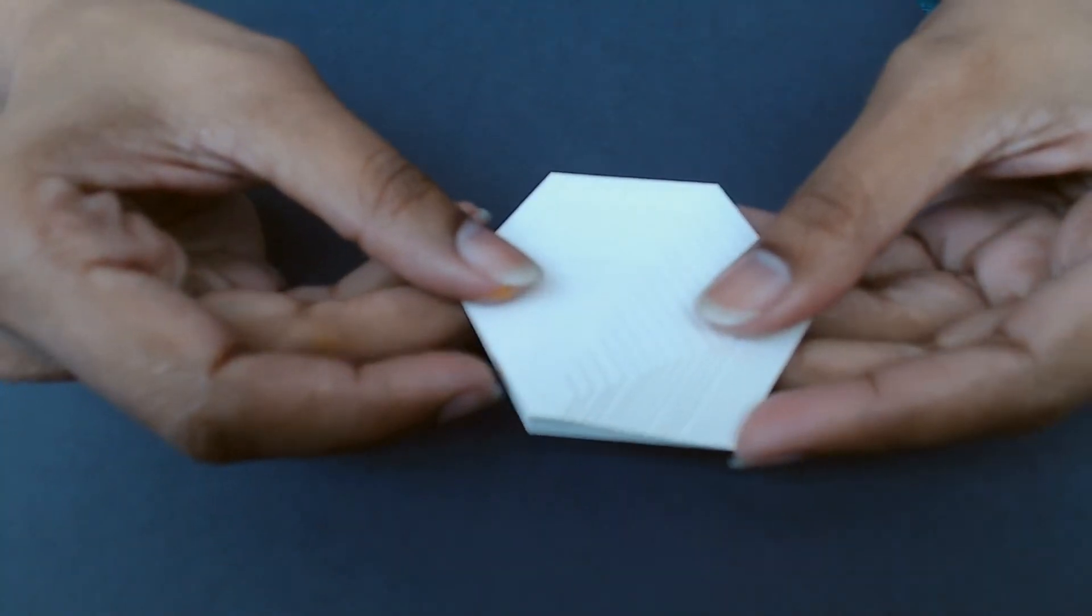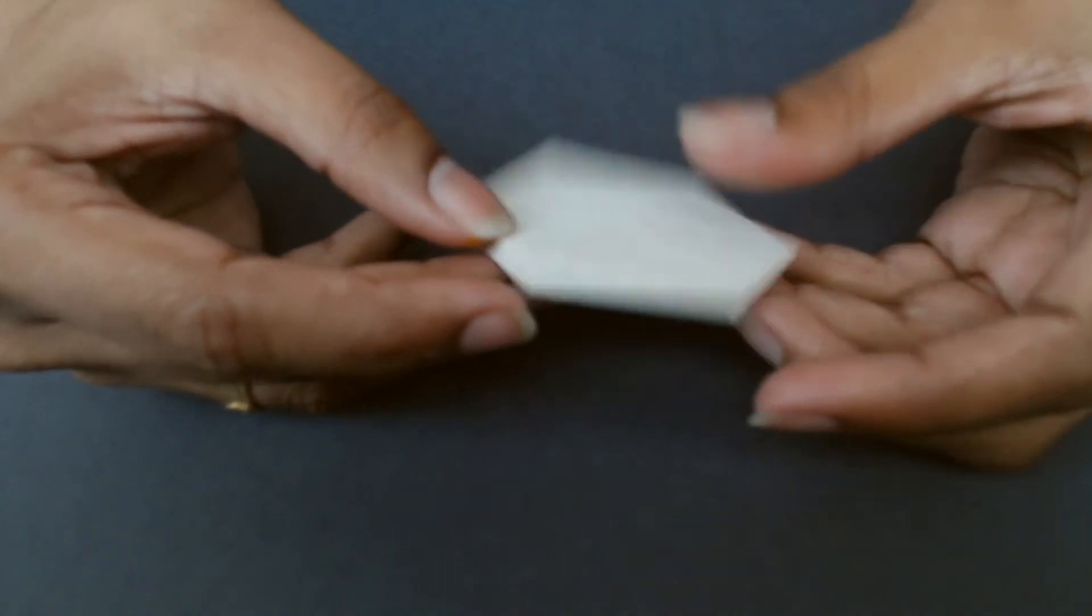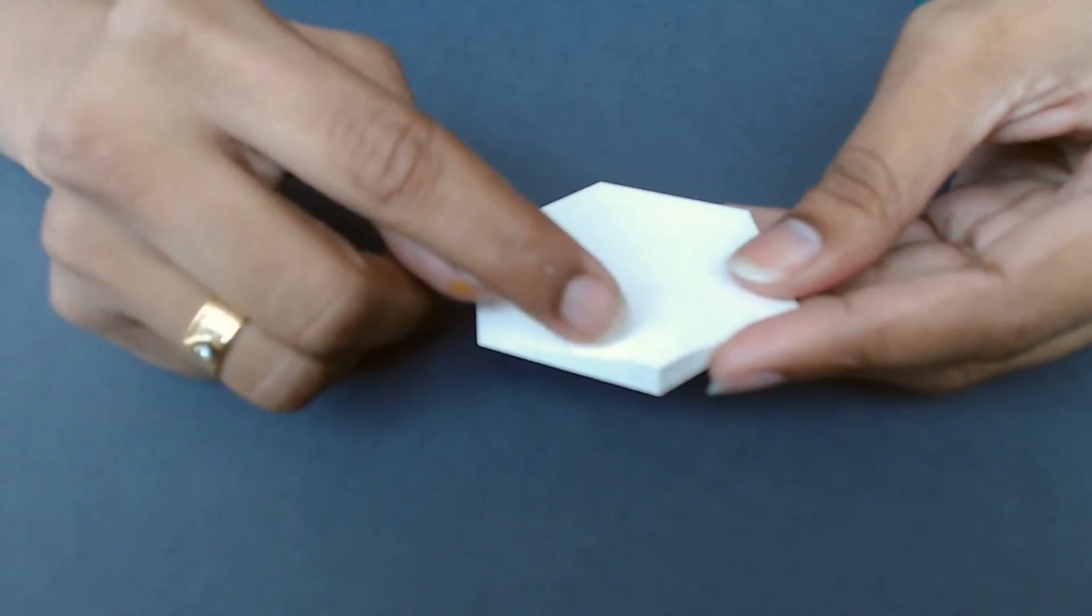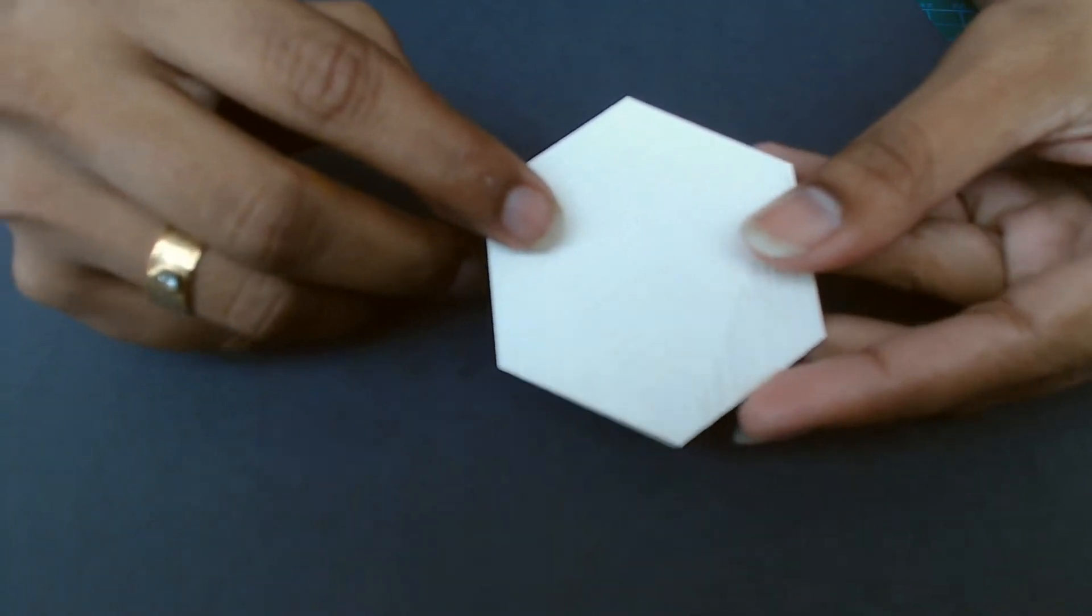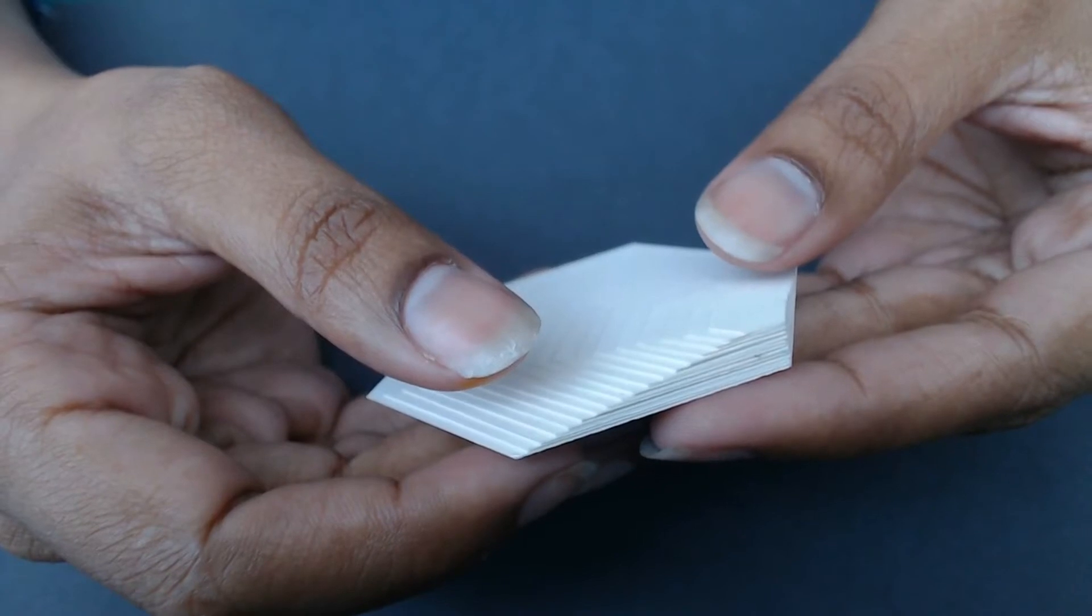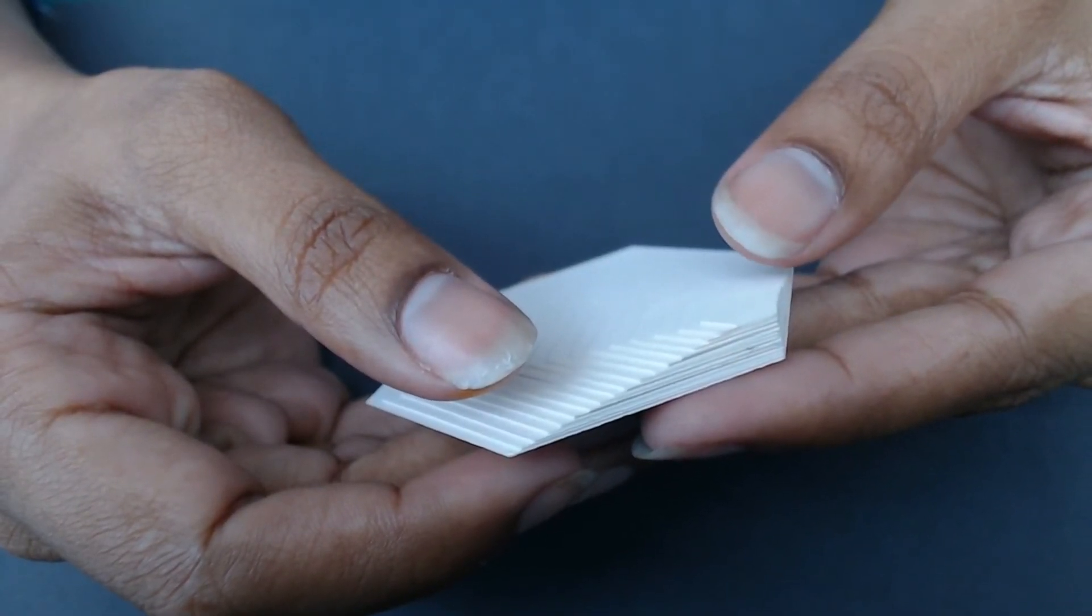It is actually 18 layers of hexagon placed one on top of another in layers. So as you can see here, that's 18 layers of paper.